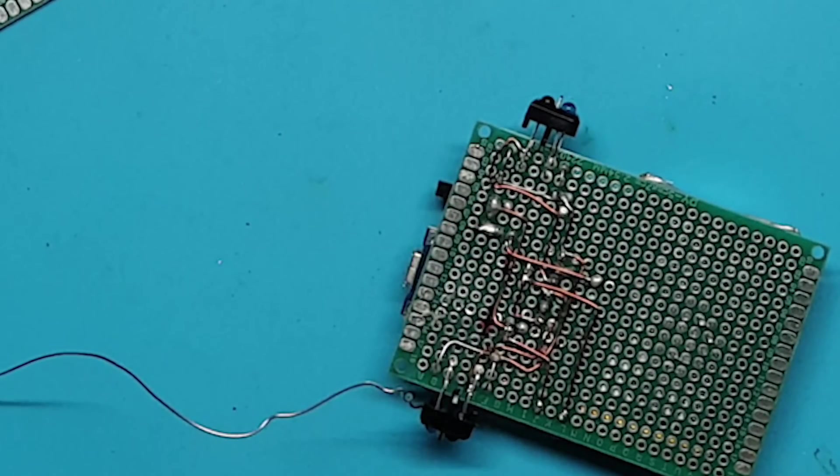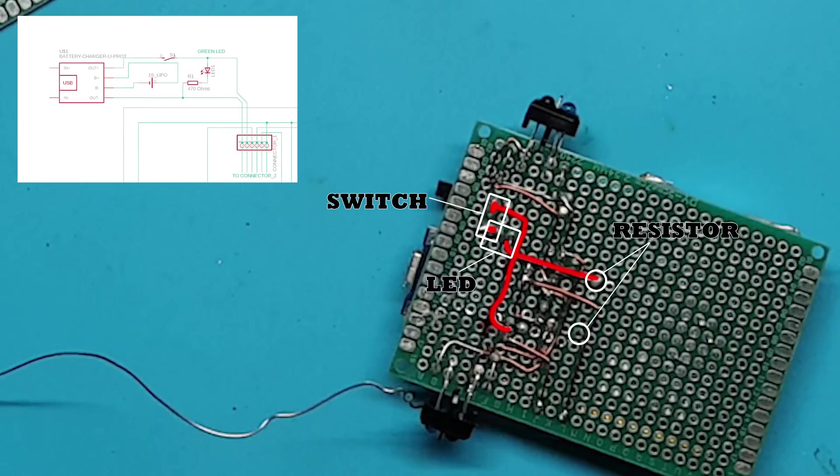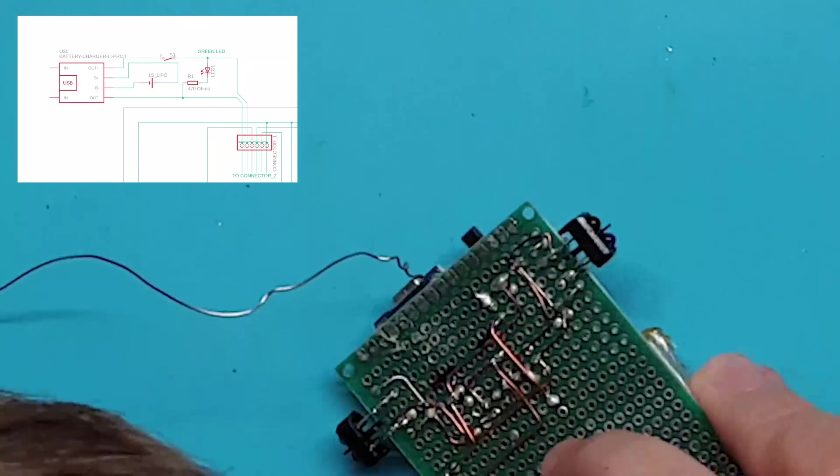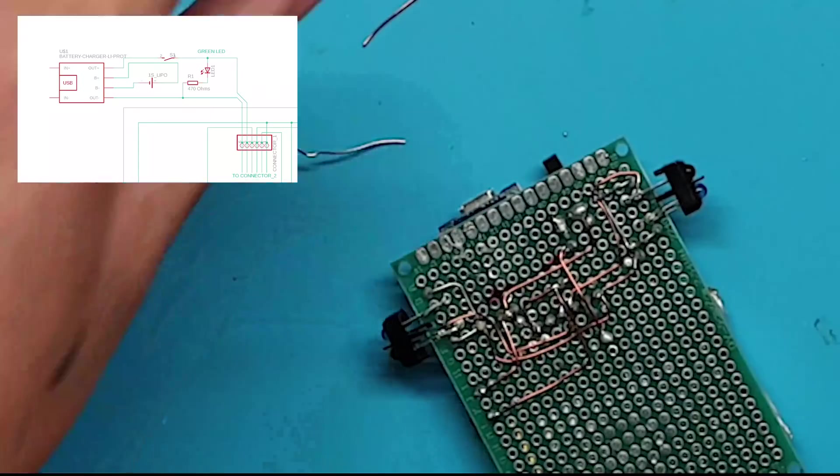It's time to connect these together. Here you can see the switch that is connected to the positive side of the battery via the charging module. You can also see the LED and resistor. The LED is connected to the resistor however the resistor is not connected to the negative side of the battery. We will do this next and connect the other side of the switch to the inter-board connector.